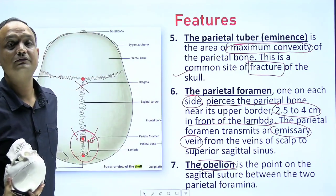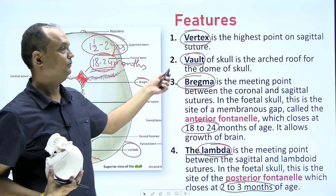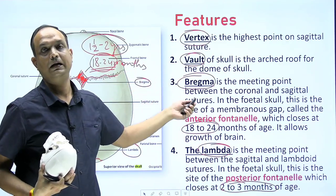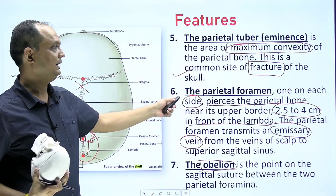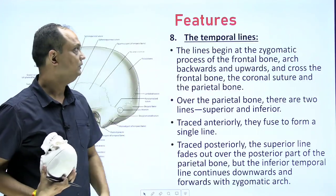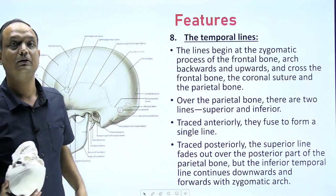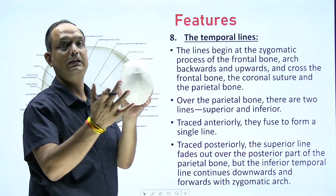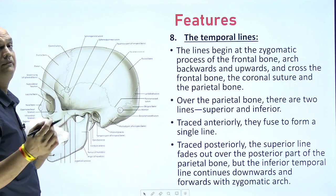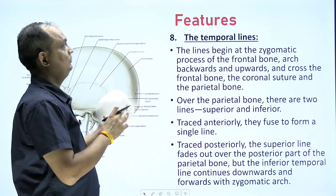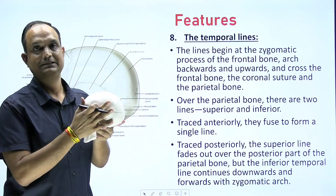So the features we have seen are: vertex, vault, bregma, lambda, parietal eminence, parietal foramina, obelion, and the last is temporal lines. When you see the norma verticalis, temporal lines are not well visible. If you want to see the temporal lines, you have to look at the norma lateralis.